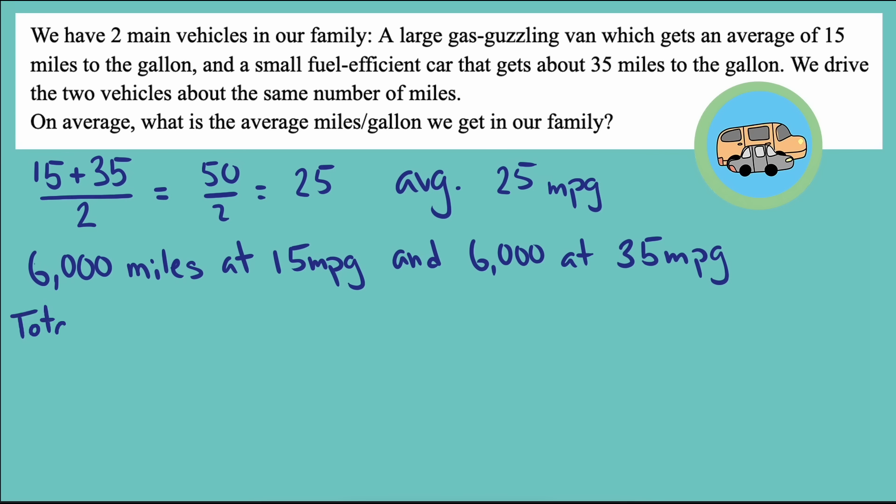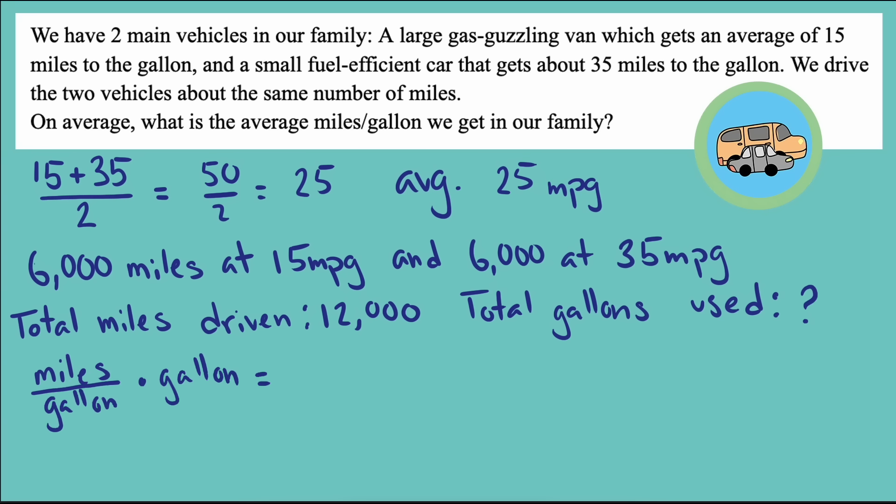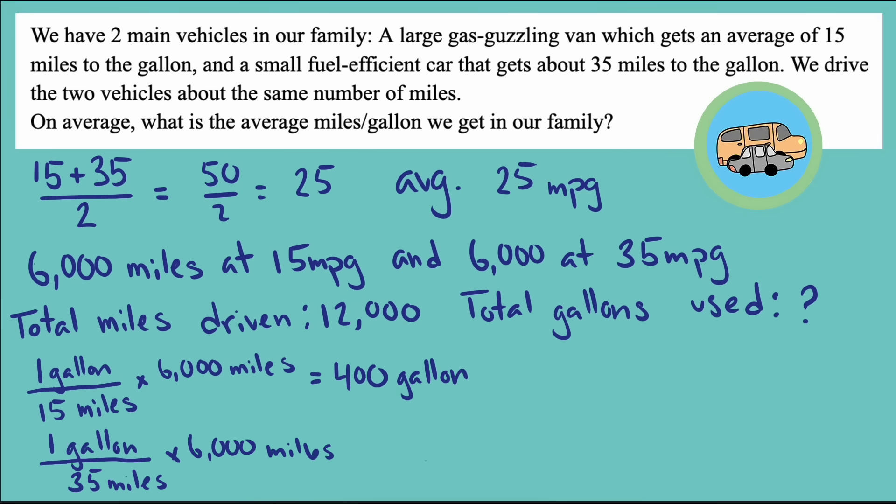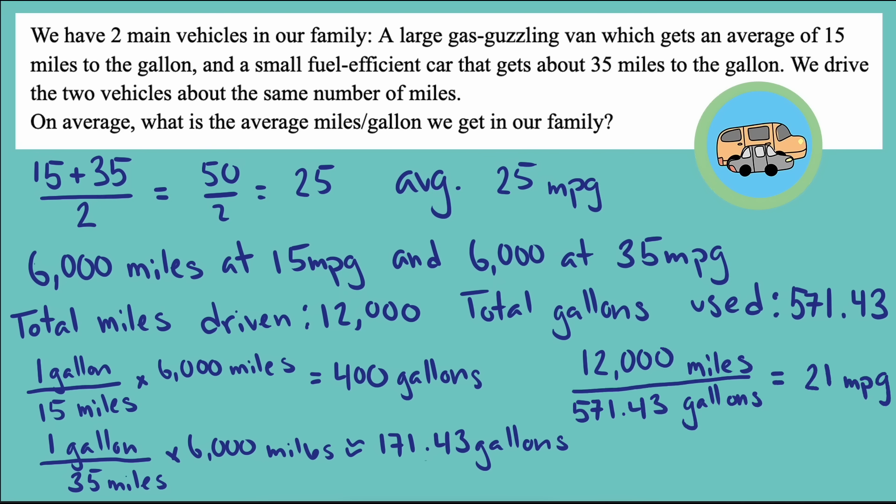Knowing how many miles each car has driven, we need to find the number of gallons used to calculate the miles per gallon. Finding out how many gallons each car used when given miles per gallon and miles driven is as simple as following the units. We get miles per gallon times gallon equals miles, and we can use this equation to solve for gallons. Now we can calculate the number of gallons used by each vehicle, add them up, and divide by the total number of miles driven. That's 12,000. So we get a gas mileage of 21 miles per gallon.